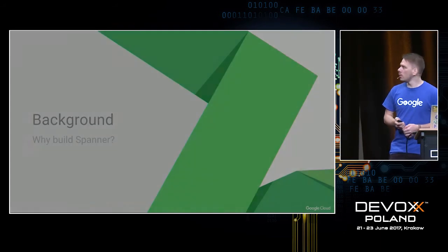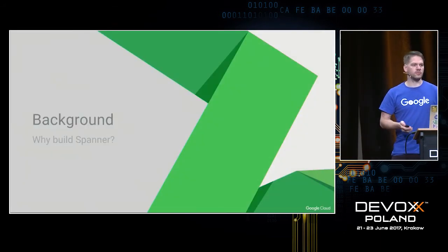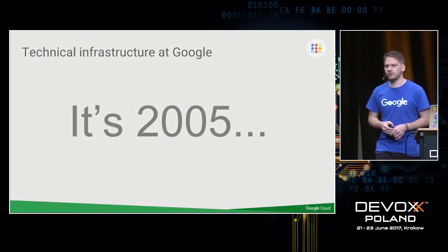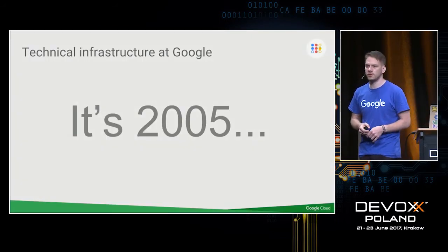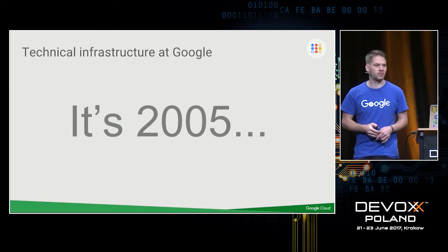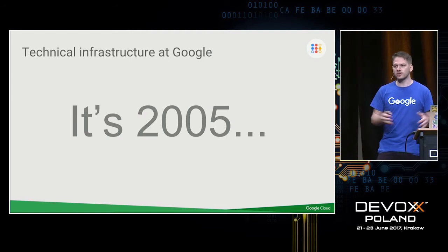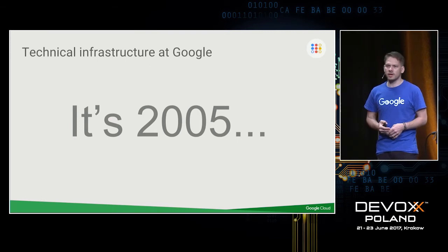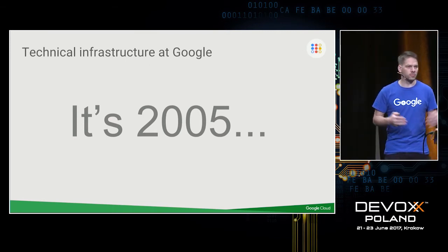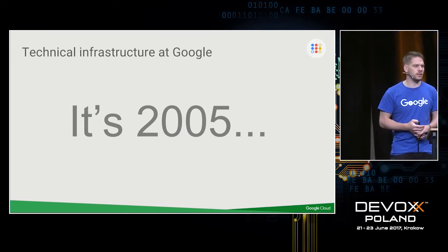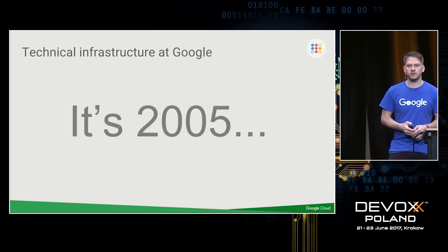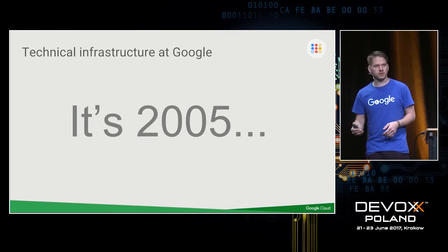Why did we build Spanner? Going back about 12 years to 2005, Google's entire business was built on top of a sharded MySQL. That sharding was based on a customer ID, backing our ad system. Our business was growing rapidly and we needed to regularly reshard the database. The last reshard we did took over two years.